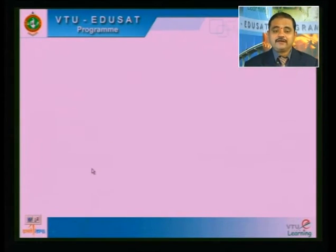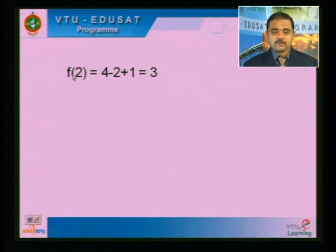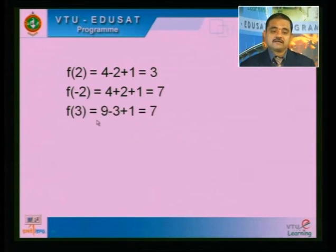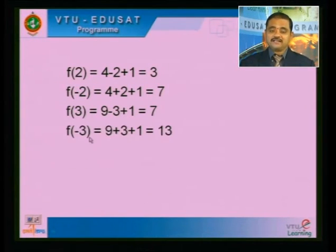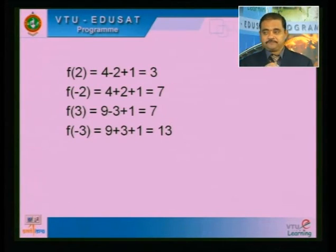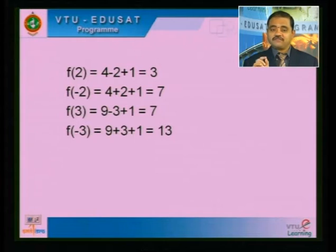The results we got are 1, 1, 3, 3, 7, 7, 13. Even though 7 appears twice and 3 appears twice, while writing F(A) we should write each value only once. Therefore the range of F = F(A) = {1, 3, 7, 13}.